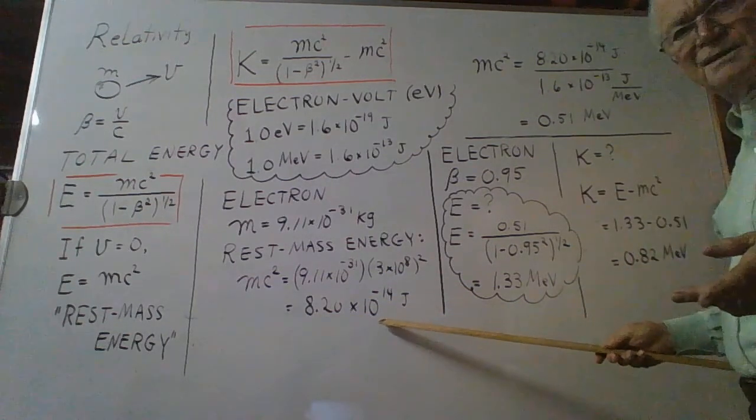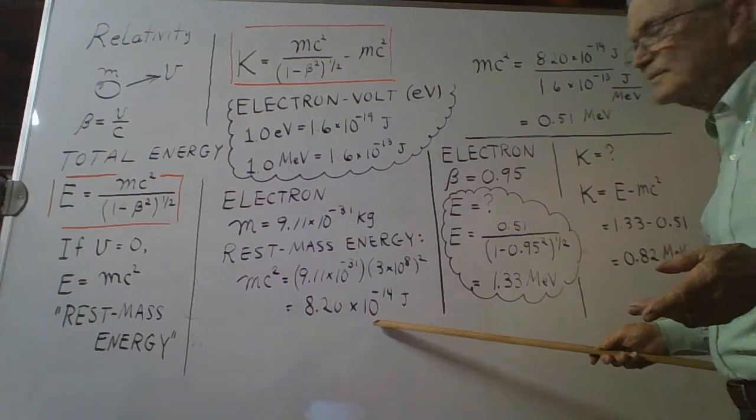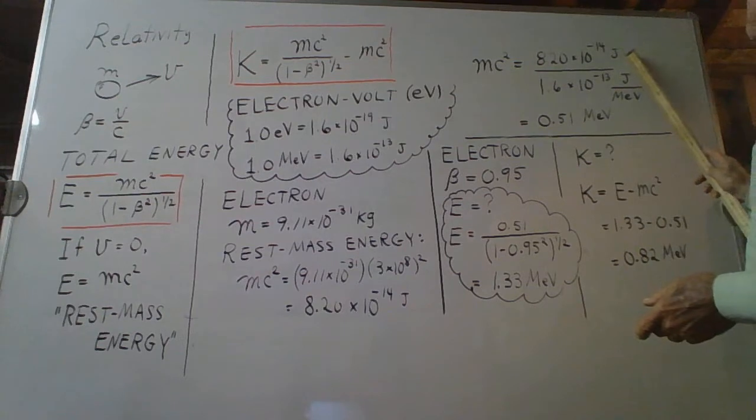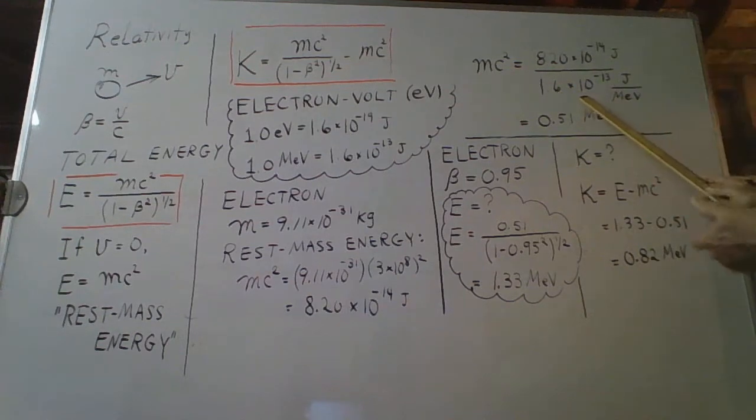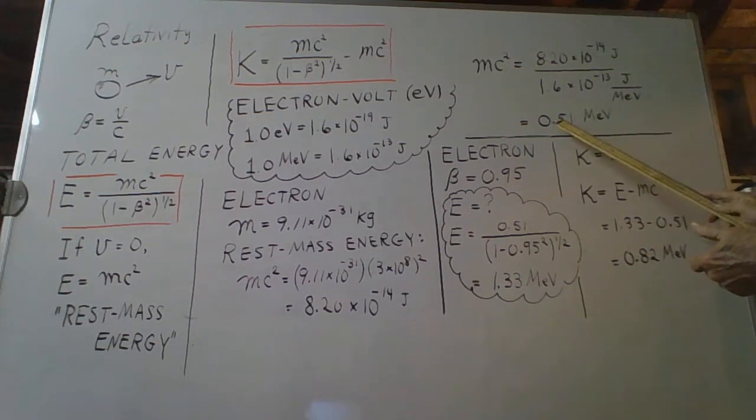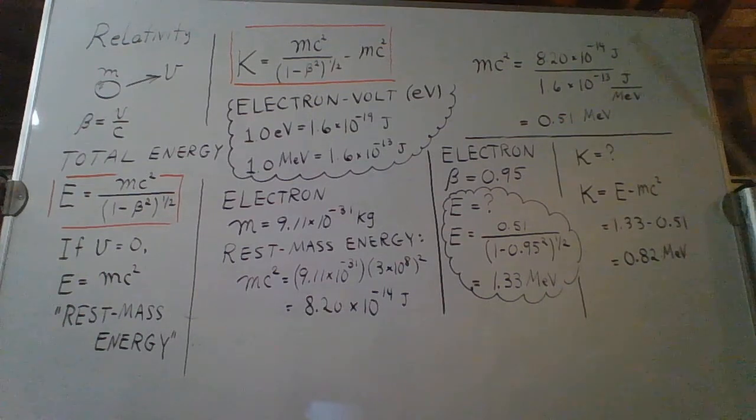Let's convert that to MeV. You have mc squared equals this many joules, and now I'll divide by this conversion factor of joules per MeV. The joules unit cancels, and the MeV unit downstairs in the denominator flips upstairs. Final result is 0.51 MeV.